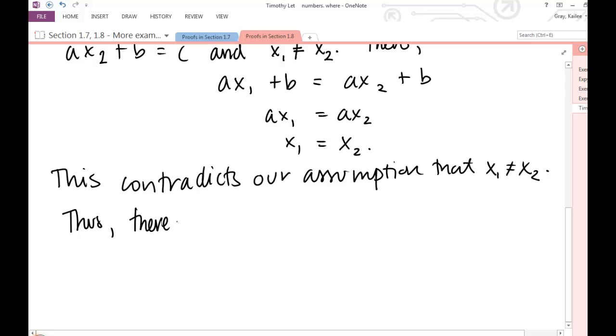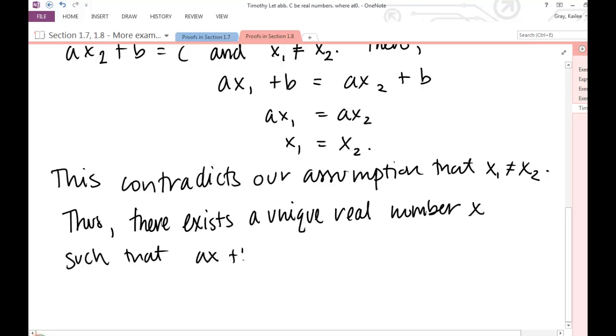Thus, there exists a unique real number x such that ax plus b is equal to c when a, b, c are real numbers and a is non-zero.